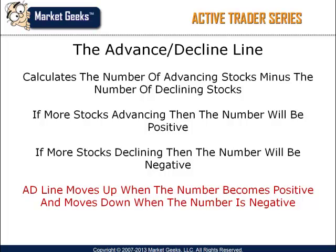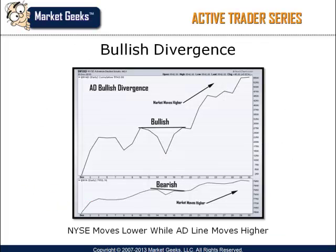The final daily NYSE advance and decline numbers are reported by the NYSE exchange on a daily basis after the closing bell. One way professional traders utilize the AD line is to compare it to the stock market index and determine if the AD line is confirming the price action of the index.